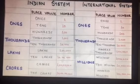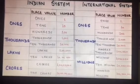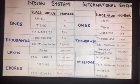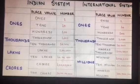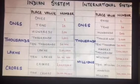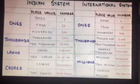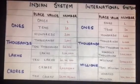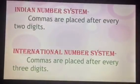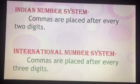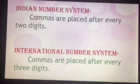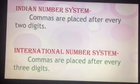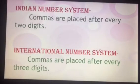Students, we all know that in the Indian number system, after 10,000 we get names such as lakhs and crores. Whereas in the international number system, we get names such as 100,000 and millions. As the Indian number system changes its name after every two digits, it will also get its commas after two digits. And in the international number system, commas are placed after every three digits.